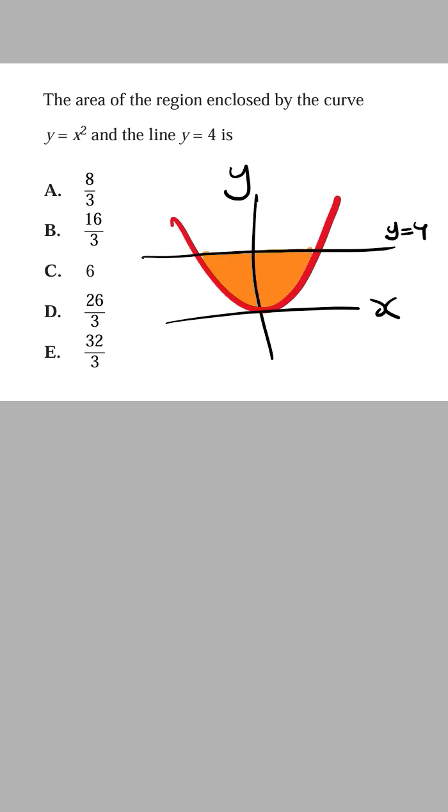Now the fastest way to work out the area of this region is to recognize that this region is bounded by two functions or two curves. And so the area is found by integrating the top function, which is going to be the line Y is equal to 4, minus the bottom function, which is X squared, DX.